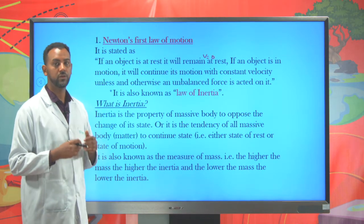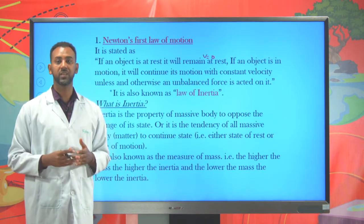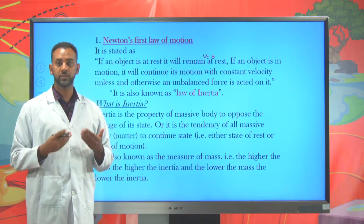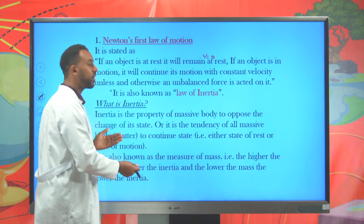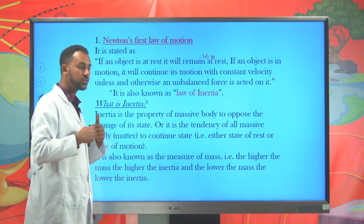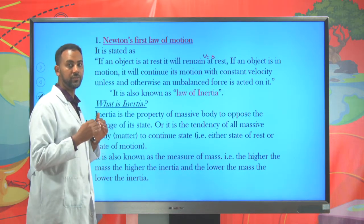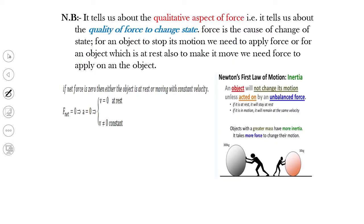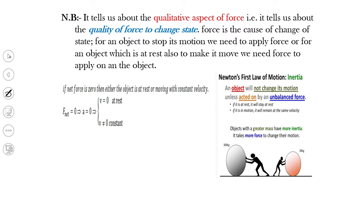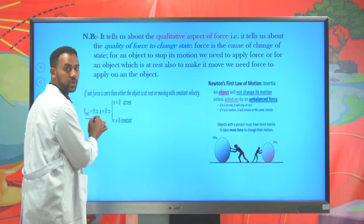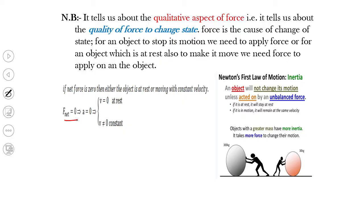This law is known as Newton's first law of motion, or the law of inertia. Inertia is a property of a massive body — it describes the tendency of a body to continue its current state. If it is in motion, it tends to continue its motion; if it is at rest, it tends to remain at rest. If the net force on an object is zero, the acceleration is zero, meaning the object is either at rest or moving at constant velocity.